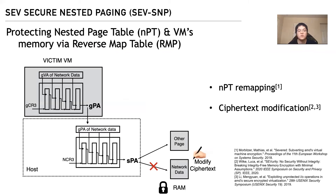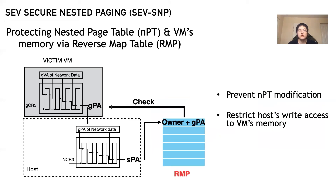The third generation is called SEV Secure Nested Paging, SEV-SNP, which was released recently. SEV-SNP aims at protecting the nested page table and preventing ciphertext modification. It uses a structure called the Reverse Map Table, RMP table, to maintain address translation information and ownership of memory pages. This prevents NPT modification and restricts the hypervisor's write access to VM memory pages. All existing attacks can be mitigated by SEV-SNP.